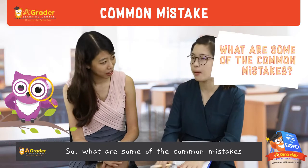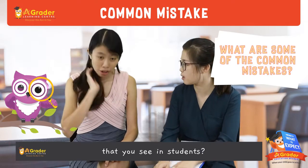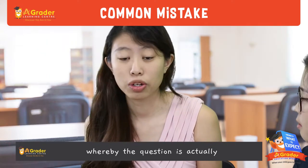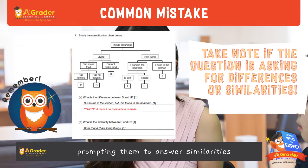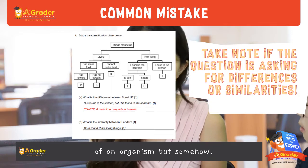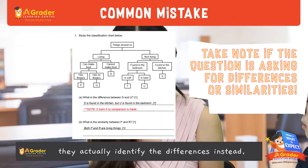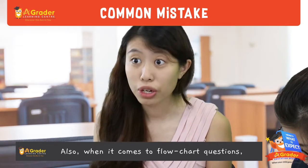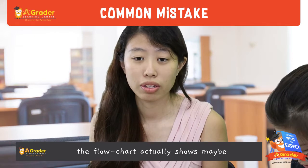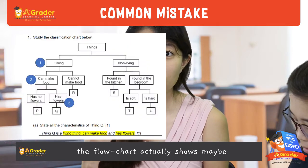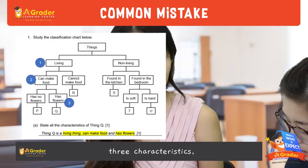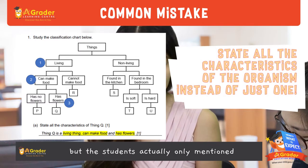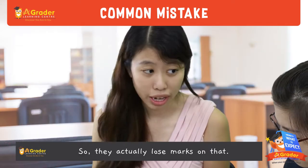So what are some of the common mistakes that you see in students? For common mistakes, a lot of students actually misread questions, whereby the question is prompting them to answer similarities of an organism, but somehow they identify the differences instead, and vice versa. Also, when it comes to flowchart questions, the flowchart may show 3 different characteristics, but students actually only mention 1 in the answer, so they lose marks on that.